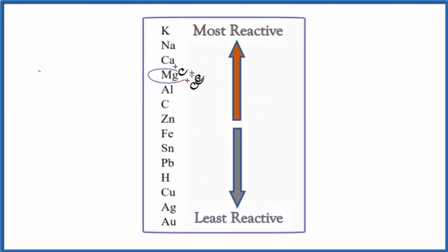So let's just find magnesium and iron. And we can see magnesium closer to the top, so it's more reactive than iron. That's going to be less reactive.